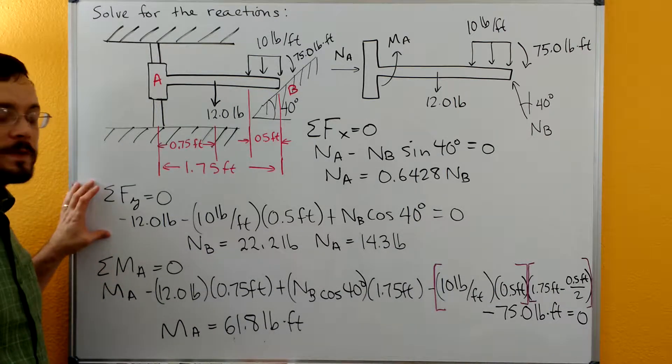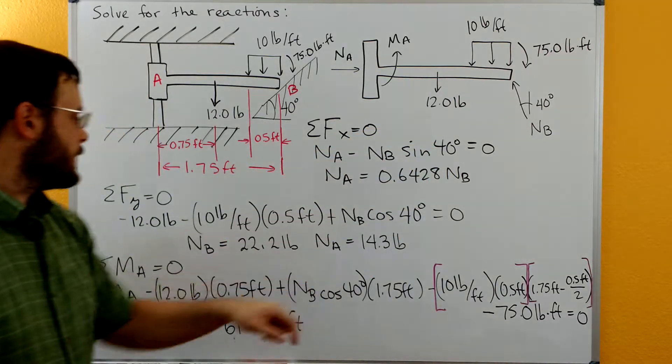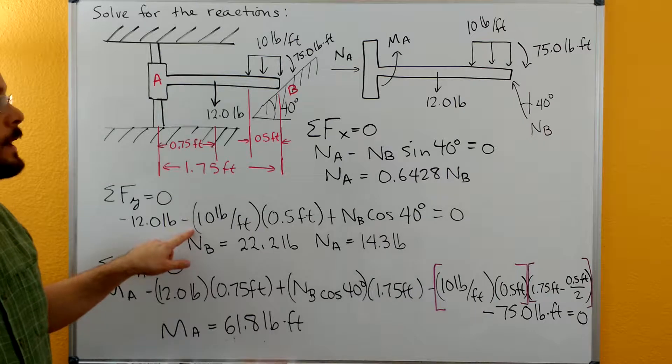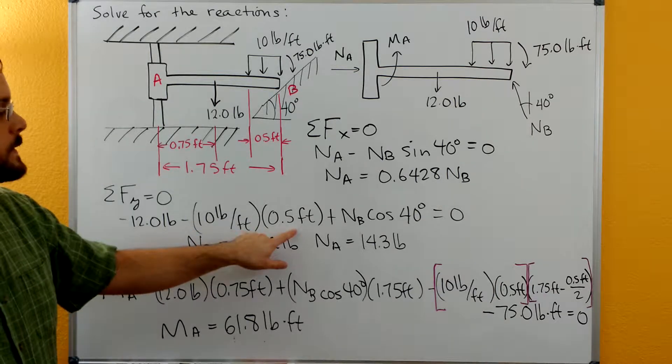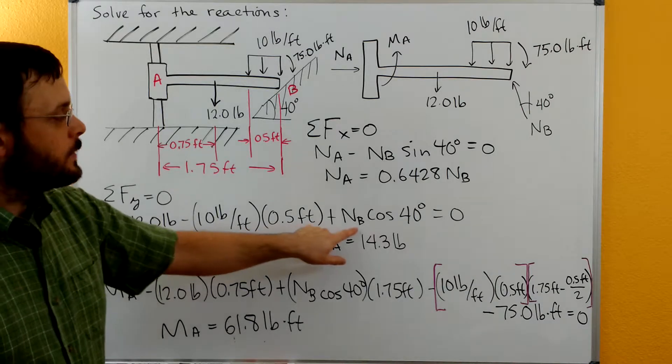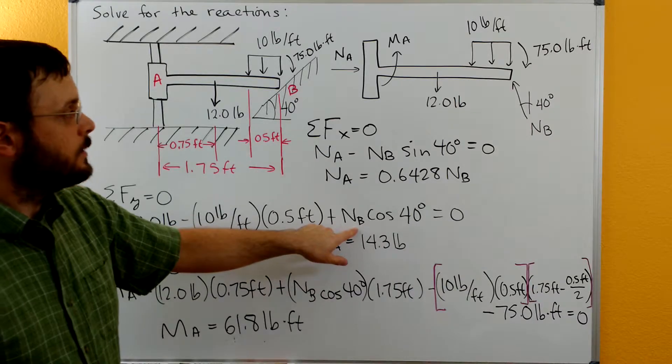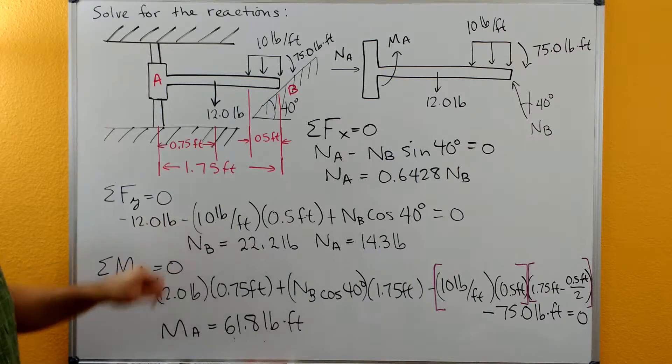Then we can do our sum of forces in the Y direction. We've got our negative 12 pounds there. We've got our distributed load, rectangular shape distributed load, so we have 10 pound per foot times the base of 5.5 feet. And then we have the Y component of the force N_B, so N_B cosine of 40. That one's positive and our distributed load is negative.